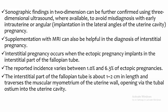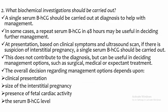Supplementation with MRI can also be helpful in the diagnosis of interstitial pregnancy. Interstitial pregnancy occurs when the ectopic pregnancy implants in the interstitial part of the fallopian tubes, representing between 1% and 6.3% of ectopic pregnancies. The interstitial part of the fallopian tube is about 1 to 2 cm in length and traverses the muscular myometrium of the uterine wall, opening via the tubal ostium into the uterine cavity. A single serum beta-hCG should be carried out at diagnosis to help with management, with a repeat in 48 hours if useful.